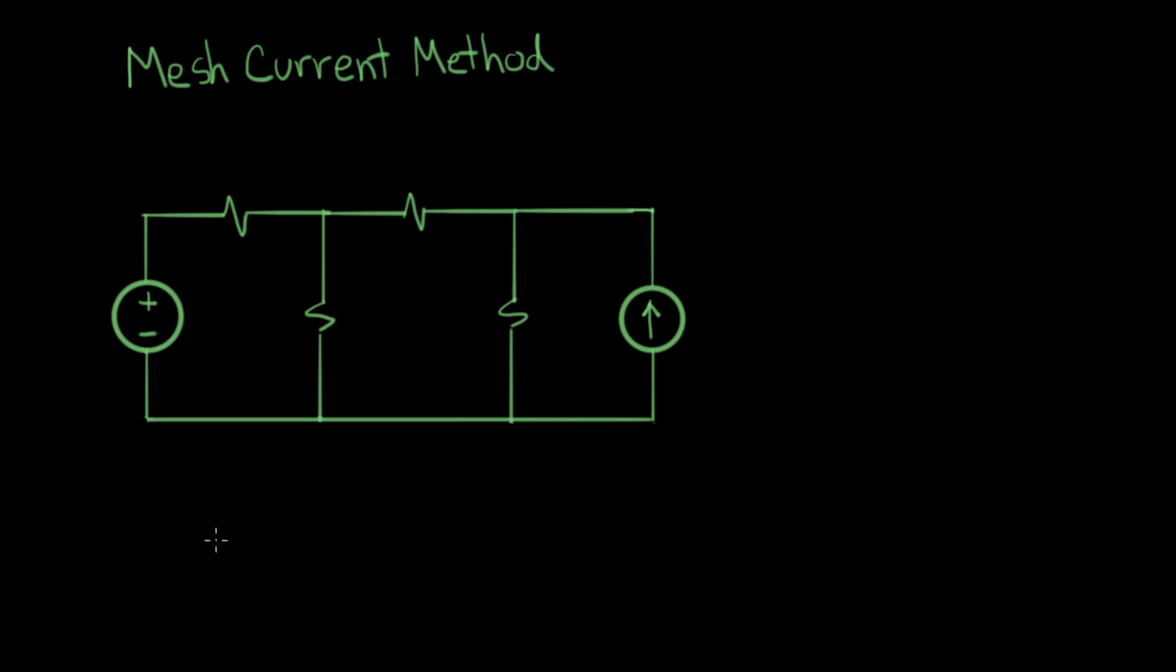In the mesh current method, we define mesh currents. A mesh current is a current that flows in a mesh, and a mesh is the open windows of a circuit. Here's one of the meshes in our circuit. There's another mesh here, it's an open window, and this third one here is another one.